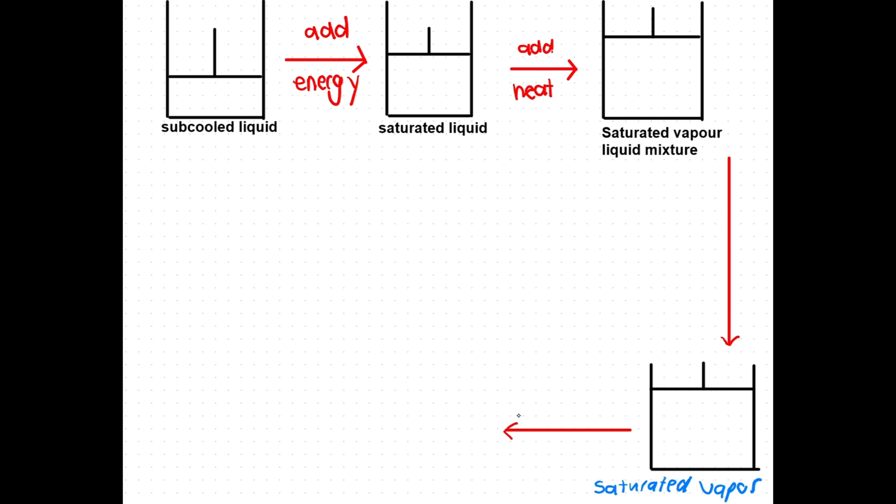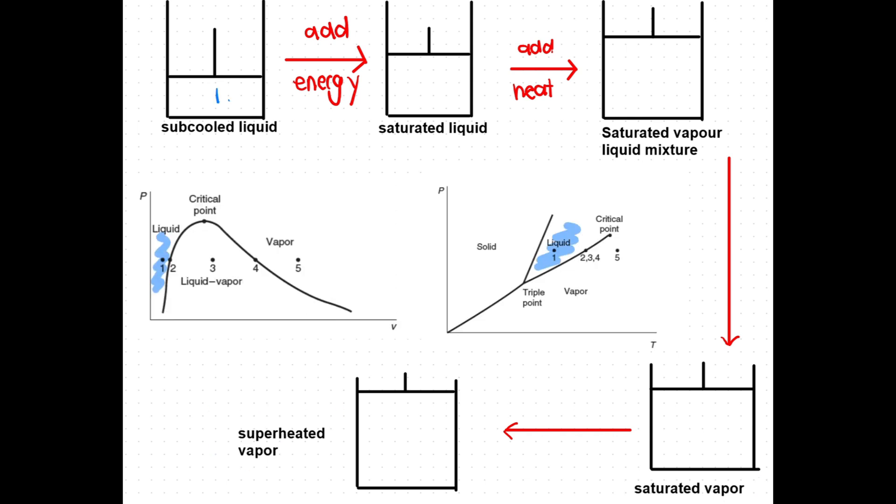When any more heat is added the vapor will heat up since no more phase changes can occur. Up to now there was only latent heat which resulted in phase changes but now temperature will increase. This is called the superheated vapor phase. The different phases can be seen on the phase diagrams for PV and PT.